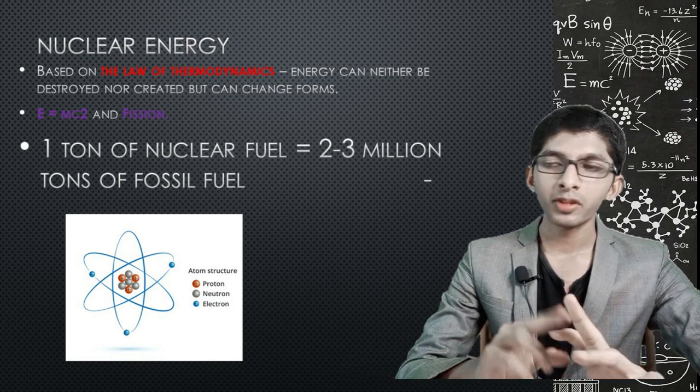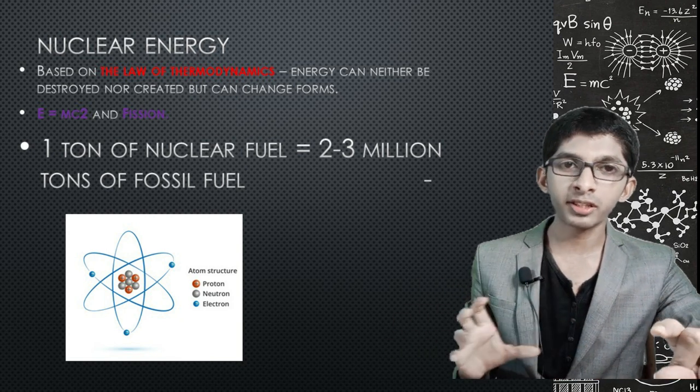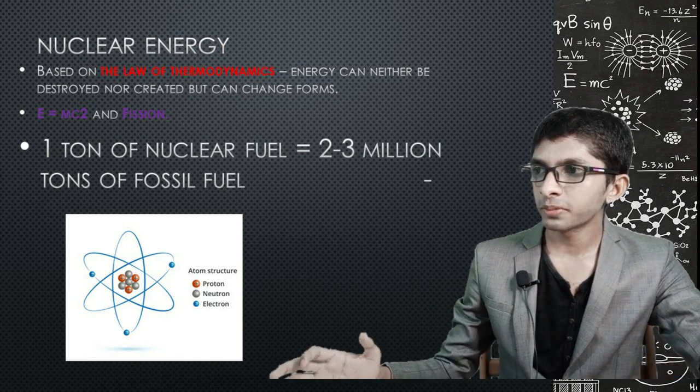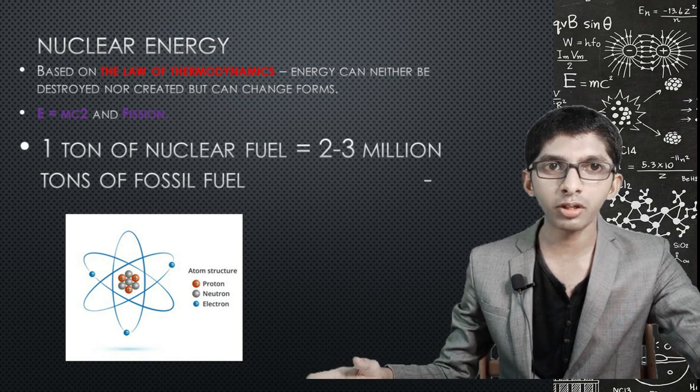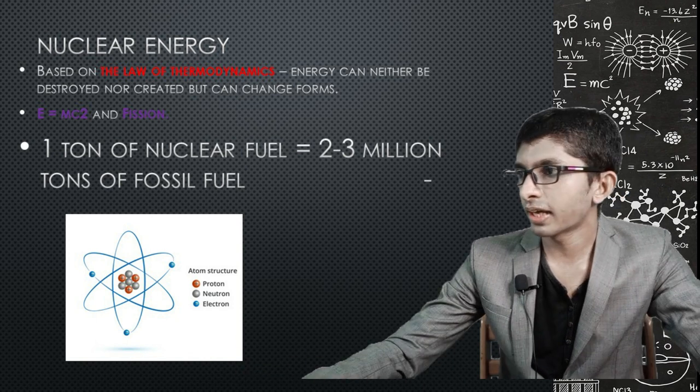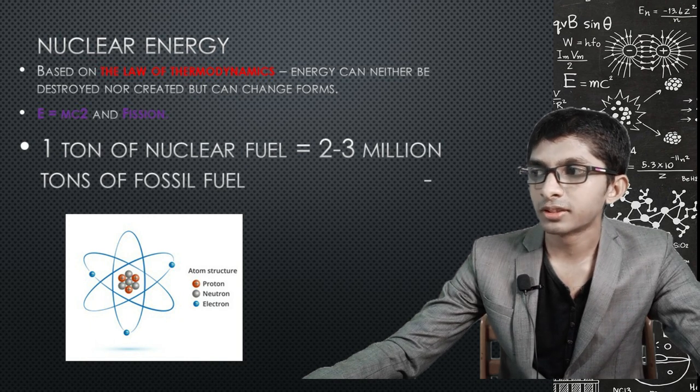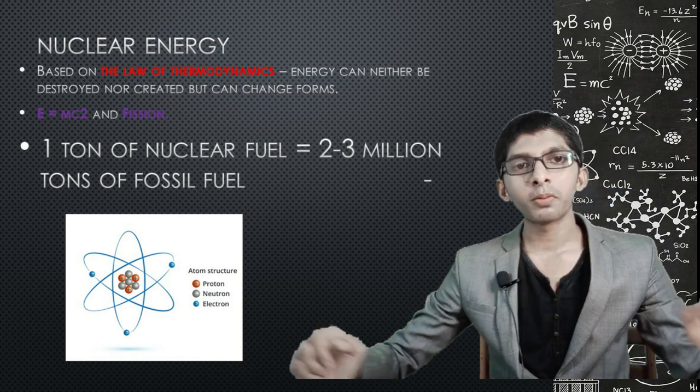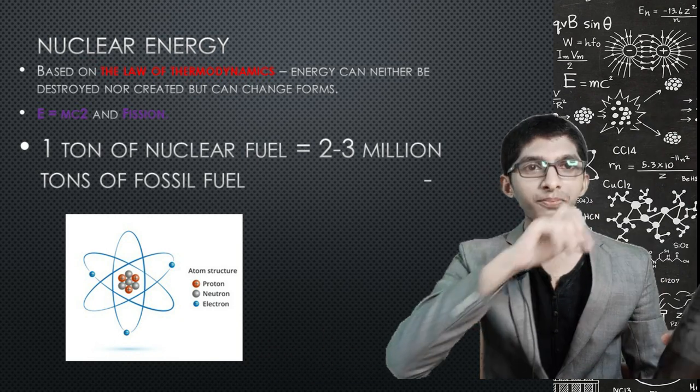Next, nuclear fission and fusion are the main principles. The famous equation is Albert Einstein's E equals mc square. E stands for energy, m for mass, and c for the speed of light squared.